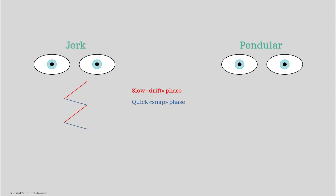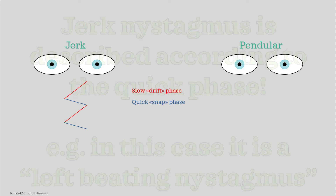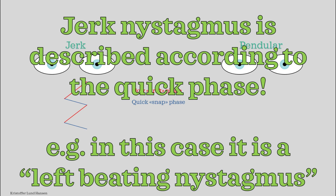A quick note: although this example shows jerk nystagmus going sideways, it can also go up and down. A super important point is that when describing jerk nystagmus, you describe it according to which direction the eye moves in the quick phase. For instance, if the quick phase goes towards the left, we call it left-beating nystagmus. It can also be described as right-beating, up-beating, or down-beating. Always describe it according to which way the quick phase goes.